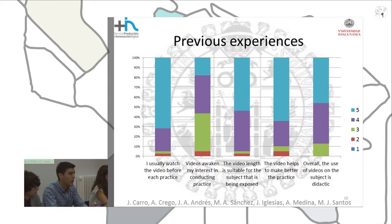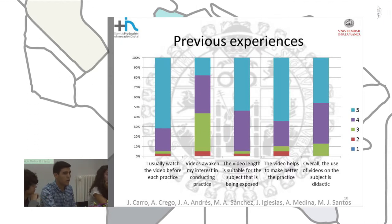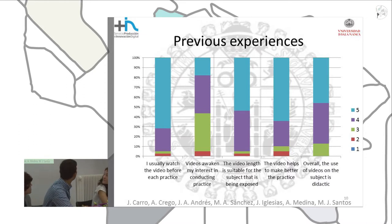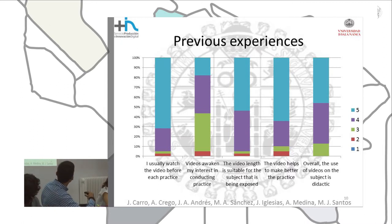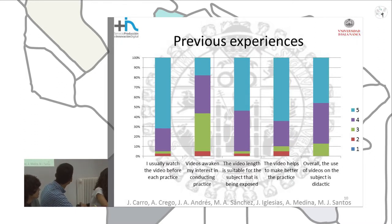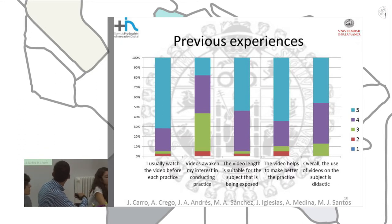The teaching innovation group has previous experiences in different degrees in our university, which were evaluated in a survey filled out by 39 students from the Grad in Eugenia Clínica. As we can see in the plot, the results are good. The x-axis represents the different questions, and the y-axis represents the percentage of agreement or disagreement. The possible answers go from 1, total disagreement, to 5, complete agreement. For example, for the question 'the video helps to make learning practical,' almost 90% of the students agreed.